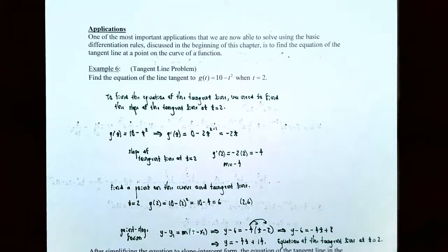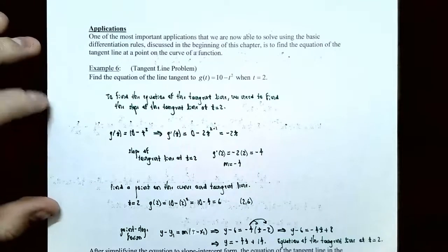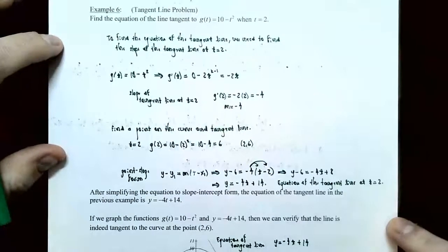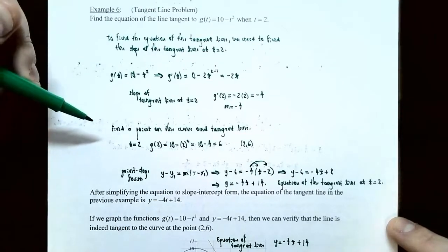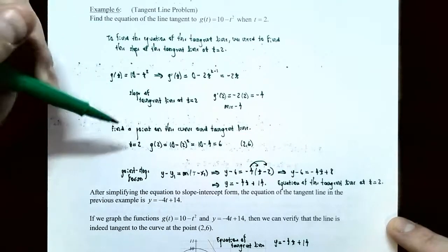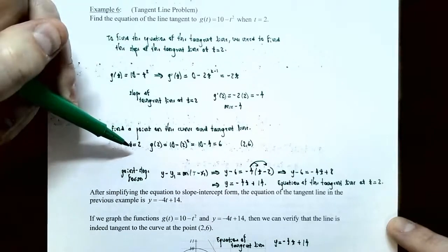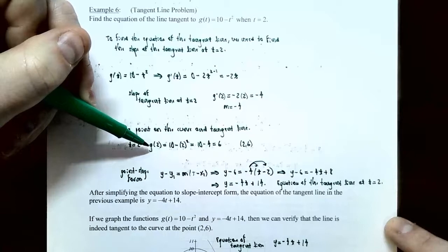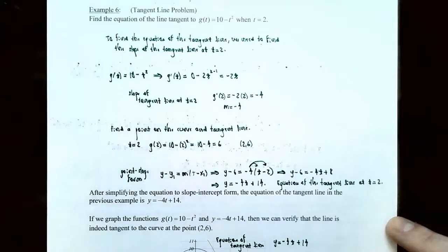We've finished the calculus part of this problem. The rest is algebra from college algebra. We know the slope, but we need one point on the line to use point-slope form. Since the tangent line passes through the curve at t equals 2, plug 2 into the original function: g of 2 is 10 minus 2 squared, which is 10 minus 4, equals 6. So the point on the curve and on the tangent line is (2, 6).